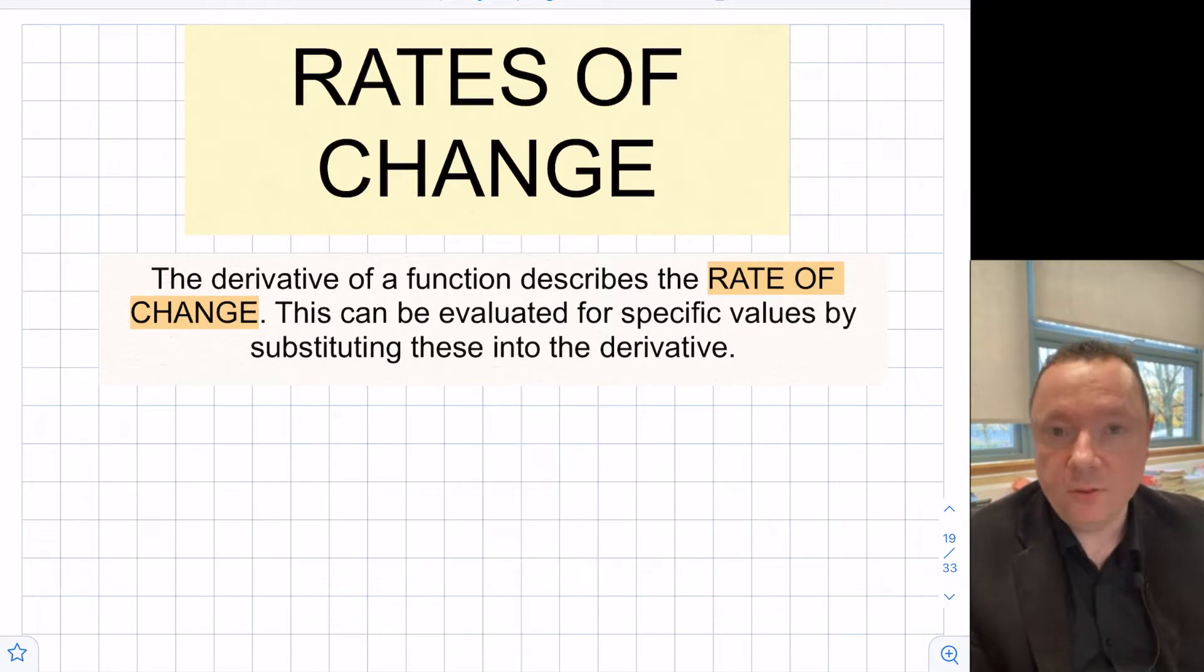So if we know the derivative and we want to find the rate of change at a specific point, say x equals 2, we just substitute 2 in. Similarly, later on, we'll see that we can also do that with the gradient of the tangent, which means the same thing as the rate of change.